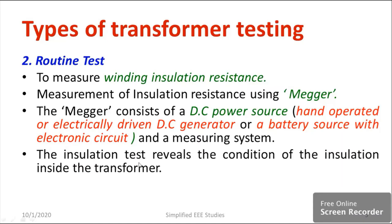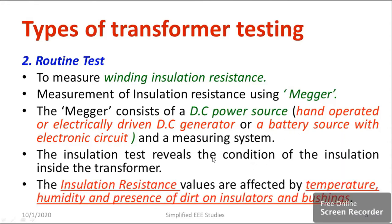Whichever you find convenient, you can use either type. The insulation test reveals the condition of insulation inside the transformer. The insulation resistance values are affected by temperature, humidity, and presence of dirt or moisture. We have to compare with the standard value of insulation resistance — it should not be less than the minimum value. If you find the insulation resistance is very low, you can understand some problem has occurred in the winding and you need to replace the winding insulation.